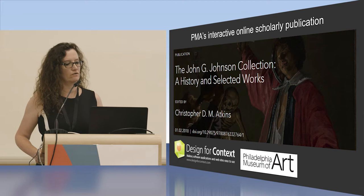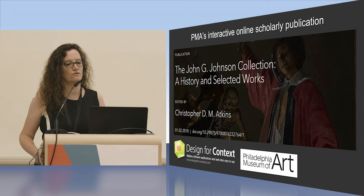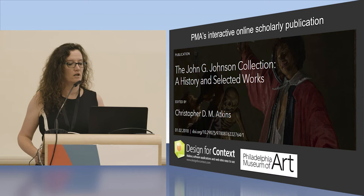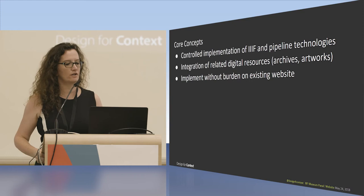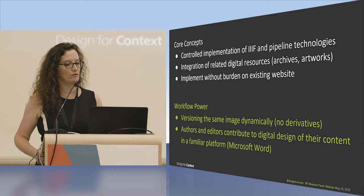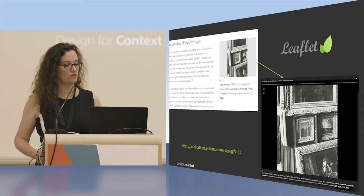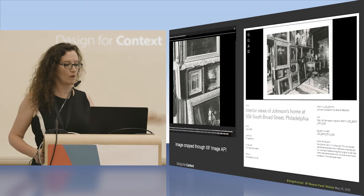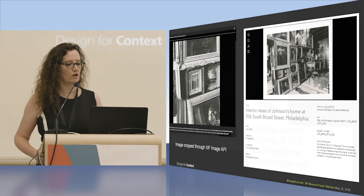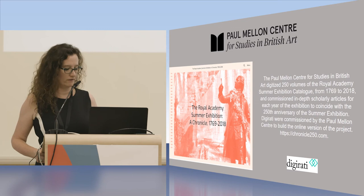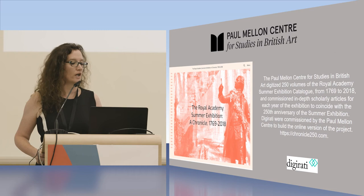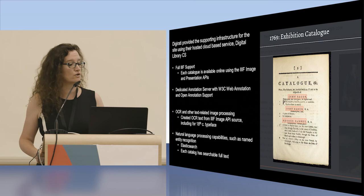The final use case is for publications. The Johnson Papers at the Philadelphia Museum of Art does this really well, bringing together artworks from the collection as well as archival material. They had strict requirements whereby curators could select exactly the region of images from full images to embed in essays for online publication. They worked hard to embed IIIF into their workflow without disrupting it too much, and they do side-by-side comparison. The Paul Mellon Center publication, again with Digirati, offers full-text search of OCR text.